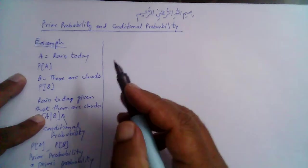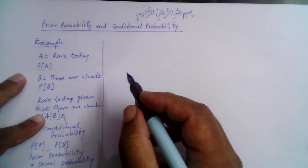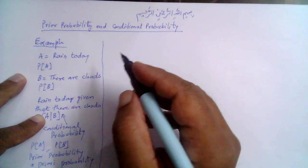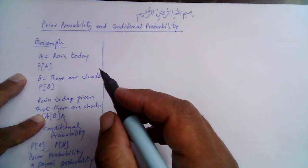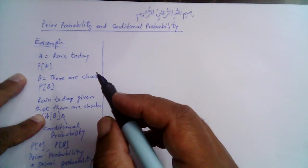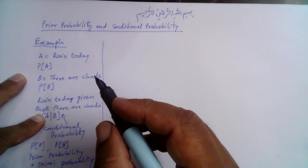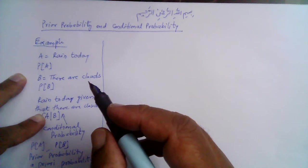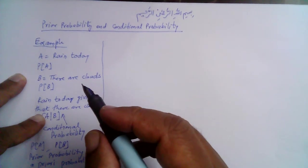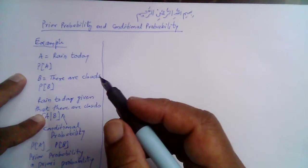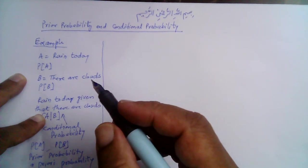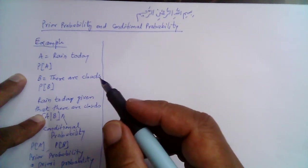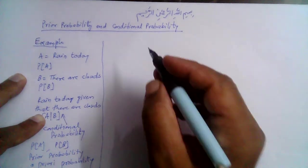In other words, we can say that conditional probability is the probability of an event when some partial, related information — related to the event which can affect its outcome — is also given or is known.